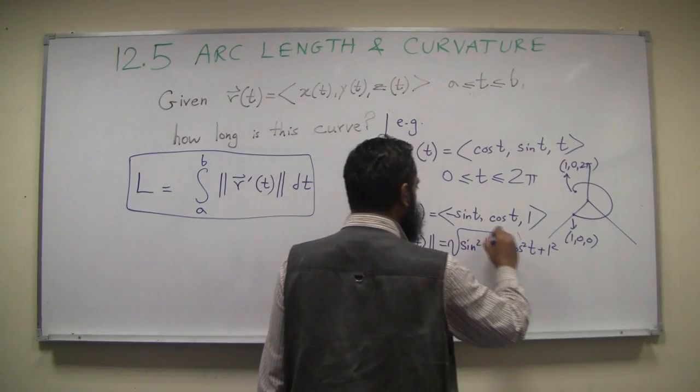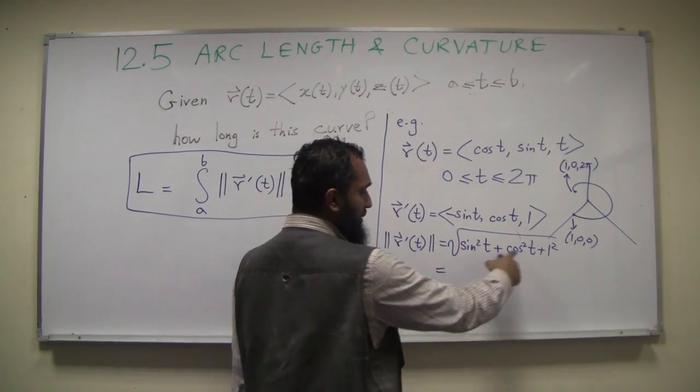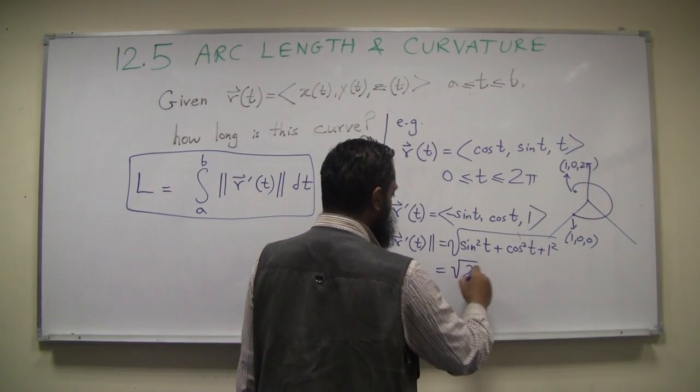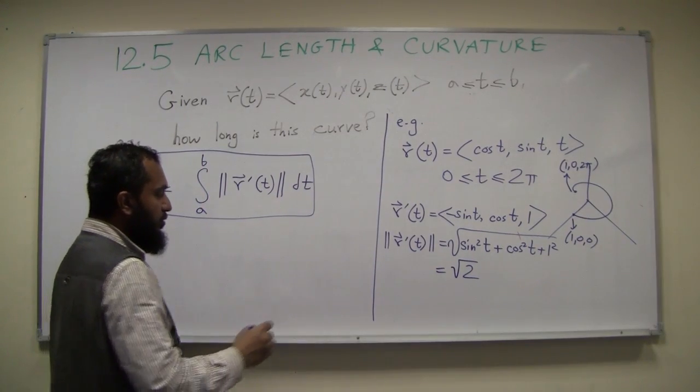How much does that equal? Sine squared plus cosine squared equals 1, so 1 plus 1 equals 2, so this is square root of 2.